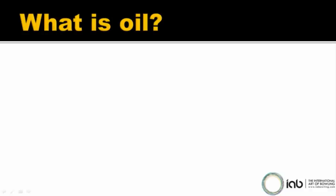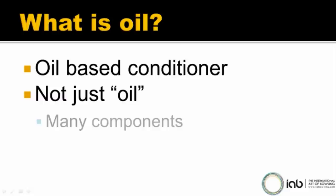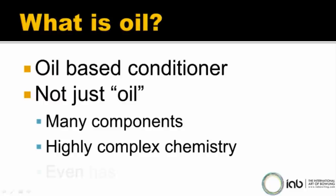First off, let's start with the basic stuff. What is oil? Oil is an oil-based conditioner used on bowling lanes, and it's not just oil — it contains a great many things and it's got a highly complex chemistry.